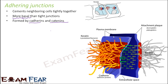Here you can see the two plasma membranes of two cells, and the cadherin proteins forming a bridge-like junction between them. Unlike tight junctions where both membranes completely stick together, adhering junctions use proteins to form a bridge. Their function is to provide rigidity and mechanical strength to the tissue.